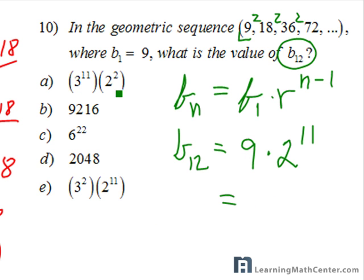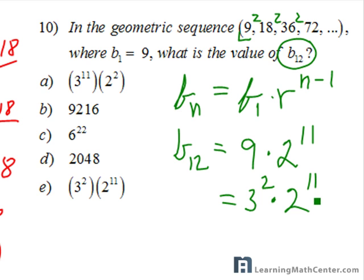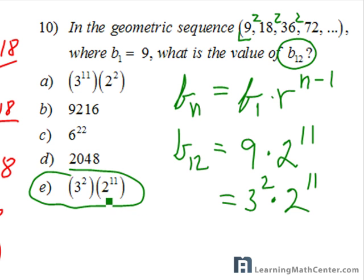Some answer choices are given in exponents, so I'm going to express this in exponential form. I can represent 9 as 3 squared, so we have 3 squared times 2 to the 11th. And as you can see, the answer is letter E — 3 to the second power times 2 to the 11th power is the twelfth term of the sequence.